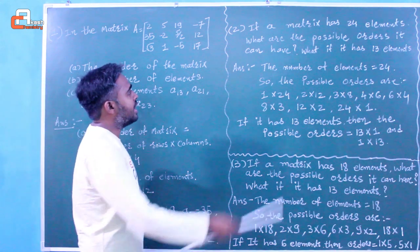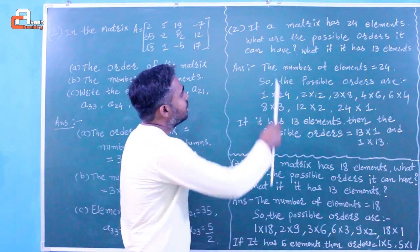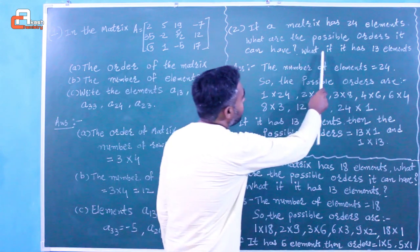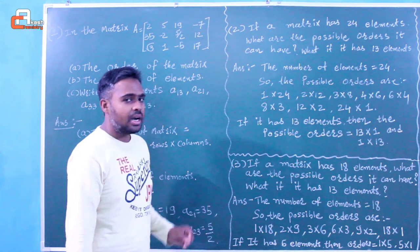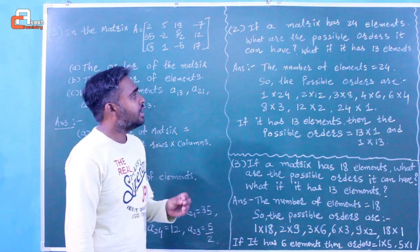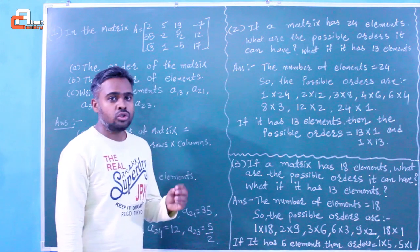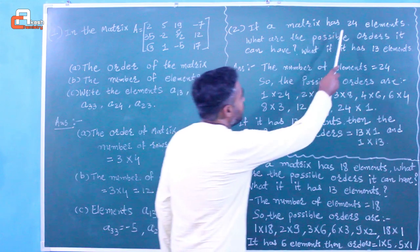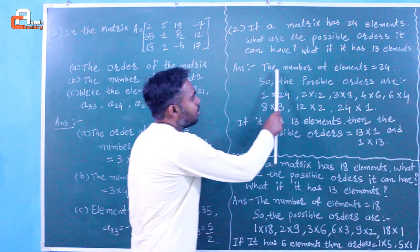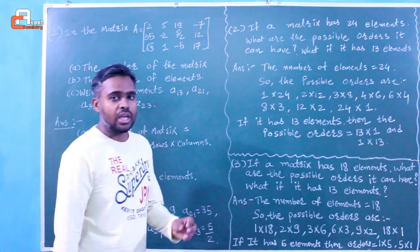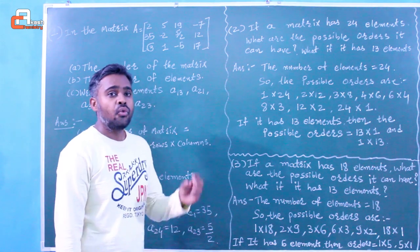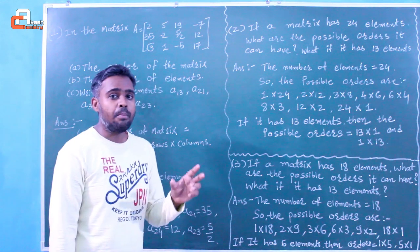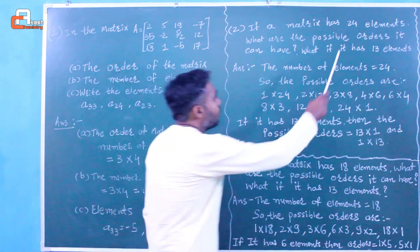Now we move to example number 2. If a matrix has 24 elements, what are the possible orders it can have? We know that for a matrix of order m cross n, the number of elements is m into n. So we need to find all pairs whose product equals 24. The number of rows and columns are always positive numbers, so all possible order pairs must have a product equal to 24.